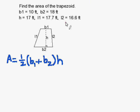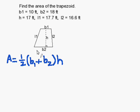Now remember, the bases of a trapezoid are the sides that are parallel to each other. And remember, in a trapezoid there is only one pair that is parallel to each other. So these two sides cannot be considered the bases.